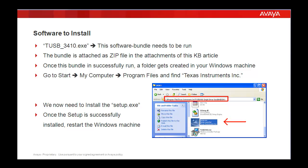Go inside the Texas Instruments Inc folder and find another folder called TUSB3410 Single Driver Installer. Get inside that folder and find another one called disk1. Once you are inside the disk1 folder, you would find executables, one of them being setup.exe. Run this executable. Once it is successfully completed, restart your Windows machine. Always select default configurations while running both TUSB_3410.EXE and setup.exe — nothing special needs to be done.